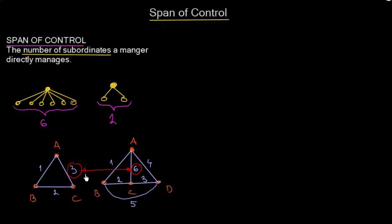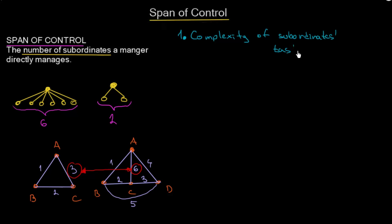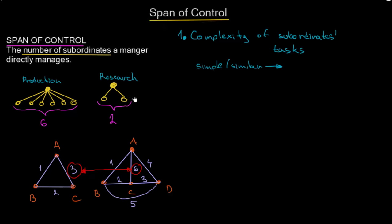How should we decide on the span of control? There are certain rules to follow. The first rule is that we look at the complexity of subordinates' tasks. On one hand, we can have a production department where tasks are quite simple and similar. On the other hand, in a research department, tasks are very complex and dissimilar.